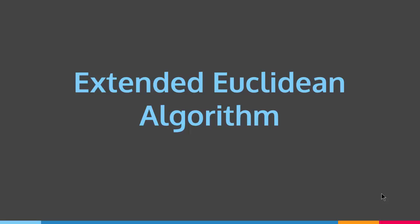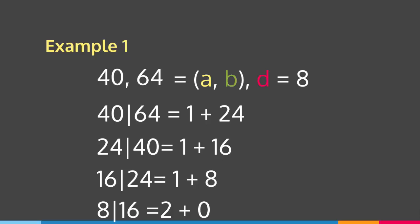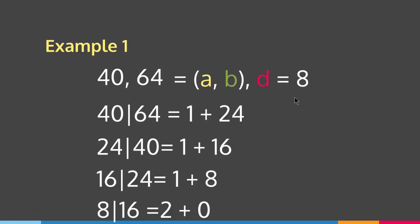First let me give you a refresher of how the Euclidean algorithm works to find the gcd of two numbers. Then we're going to modify those equations in order to extend it and find two numbers x and y such that x times 64 plus y times 40 will equal 8, which is our greatest common divisor. We have to reach that level.